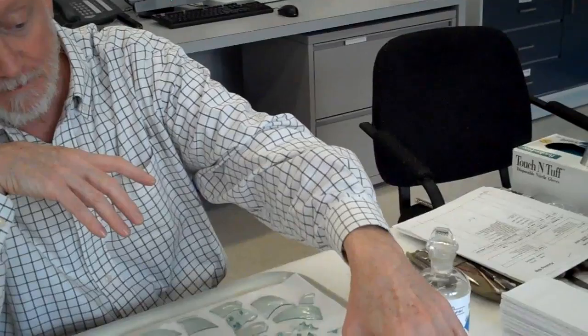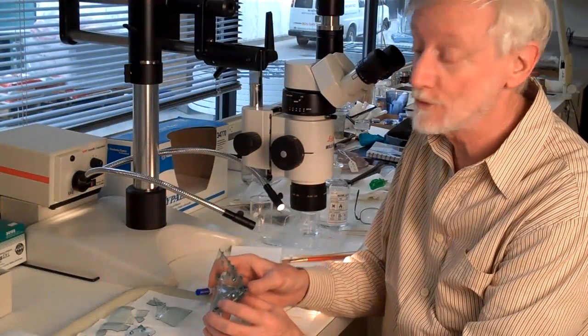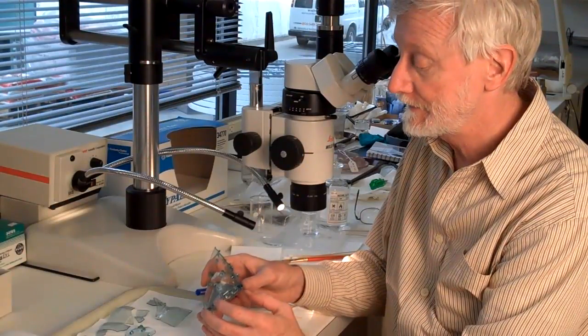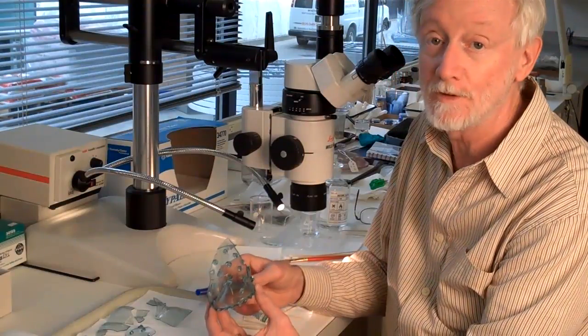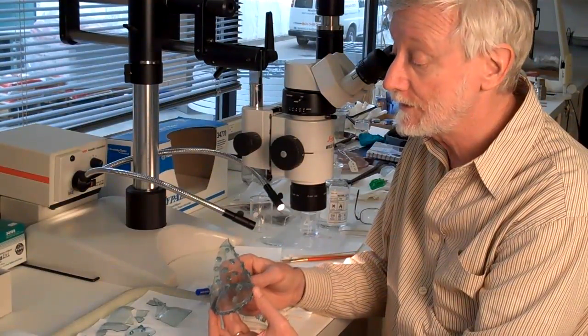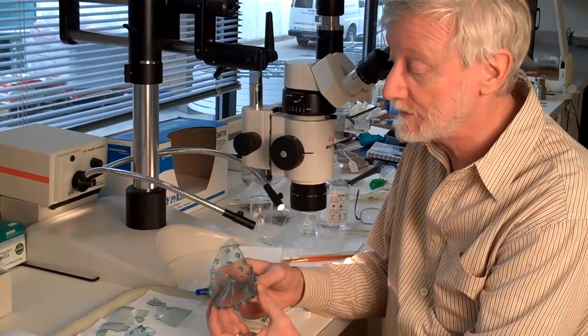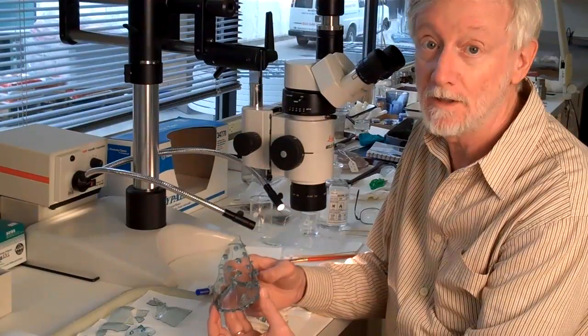We are going to fill the losses here, so this will actually look virtually intact. One of the difficulties in re-treating a piece of glass is that it's very important to remove all traces of previous adhesives and fill materials. I think it's been restored at least twice, possibly even three times from the different residues I'm finding on the surface.